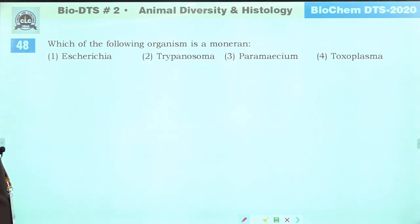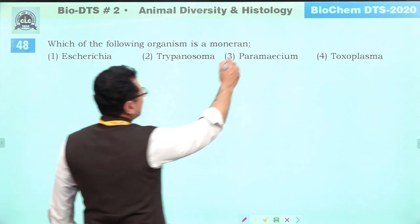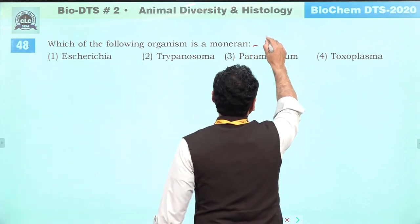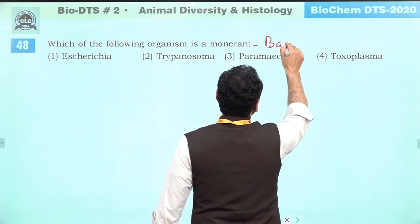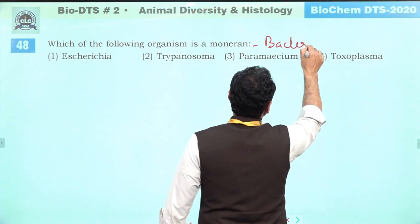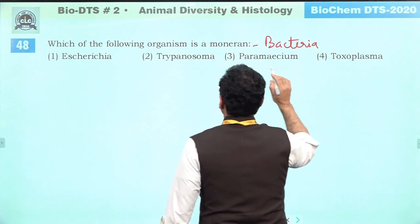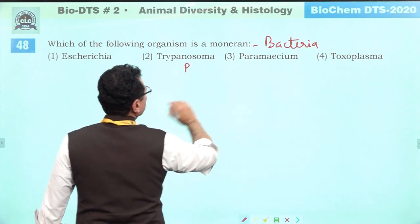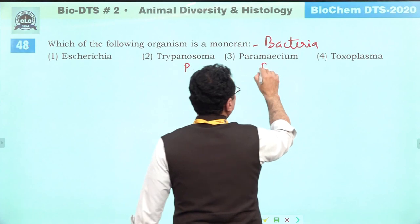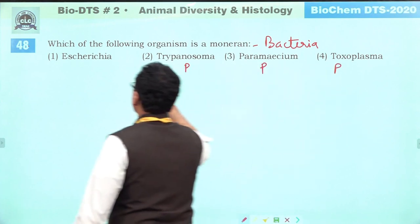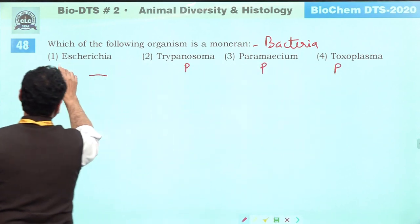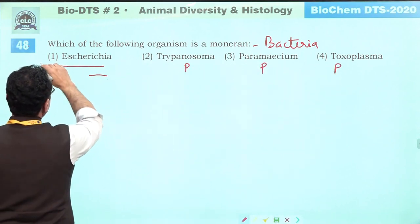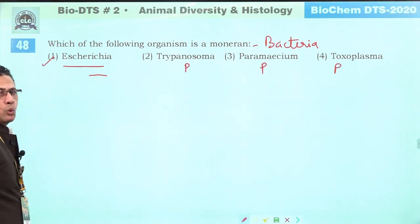Which organism is a moneran? Moneran means a bacterium. The other options are protozoans. E. coli is a bacterium. Answer is one.